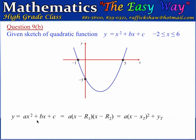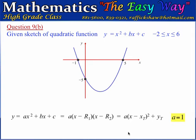The quadratic function can be expressed in three basic forms: the standard form, the factor form, and the vertex form. Each form gives us information that the other forms cannot. Comparing the standard form with the given expression, we see that our a value is equal to 1.